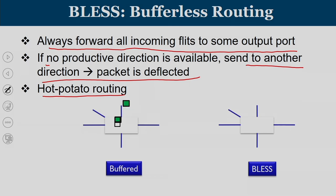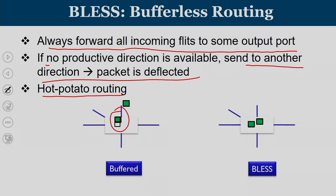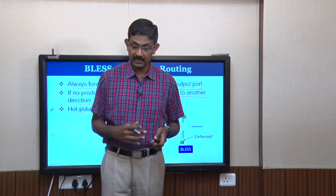When two flits arrive, one gets a productive port — let us say we want to go north, so that flit moves north. The other one is buffered — that is the advantage of a buffered design. In contrast, with a bufferless design, two flits come in, one gets the north port, and since there is no buffer to accommodate the second flit, it gets deflected away. That is the basic difference: as long as you have buffers, flits not getting the productive port are deflected away.